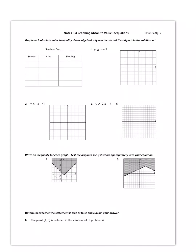In today's lesson we're going to graph absolute value inequalities. Before we dive in, let's do a little review from Algebra 1. When we graphed inequalities, less than gives a dotted line and we shade down; greater than is a dotted line and we shade up. Less than or equal to is a solid line shading down; greater than or equal to is solid and shades up. If it has a line, it gets a solid line; if it doesn't, it gets a dotted line.